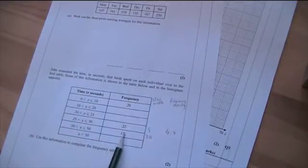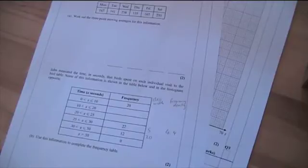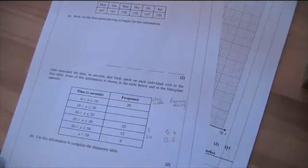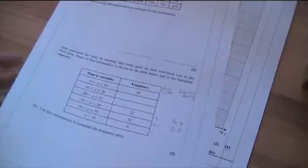Next, I'm going to do 12 divided by 20. 12 divided by 20 is 0.6. Okay, so now we've done that information, we can put it onto our histogram.